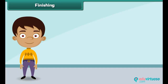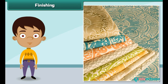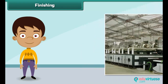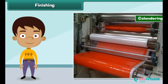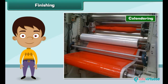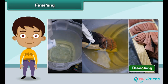The process that improves the appearance and usefulness of a fabric is known as finishing. Some important finishing treatments given to a fabric are: brushing, which removes short and loose fibers from a fabric; calendering, which improves the smoothness and shine of a fabric; and bleaching, which removes the natural color of raw fabric.